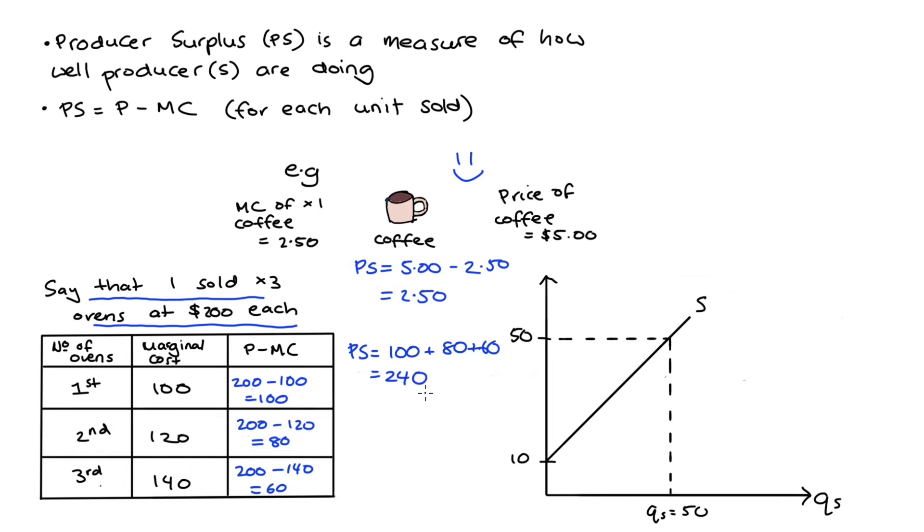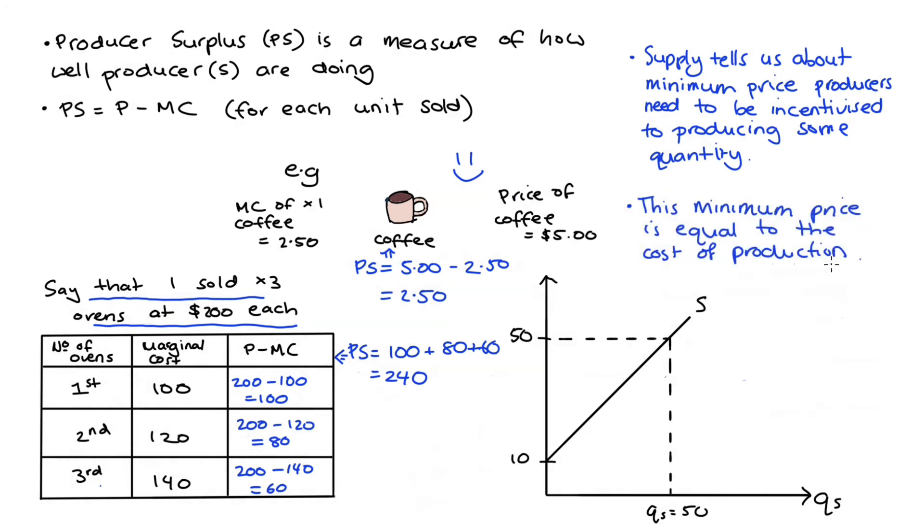Now we might also have examples like this one on the bottom right-hand side of the screen where we have a supply curve and we see the price is 50 in this case and the quantity supplied at that price is equal to 50. Now here we just have to realize that our supply curve tells us about the minimum price that suppliers need to be incentivized to produce some quantity and that that minimum price is just the cost of production, i.e. it's the marginal cost. So we can find our producer surplus in these scenarios using our supply curve because our supply curve essentially tells us about the marginal cost of production for each unit.